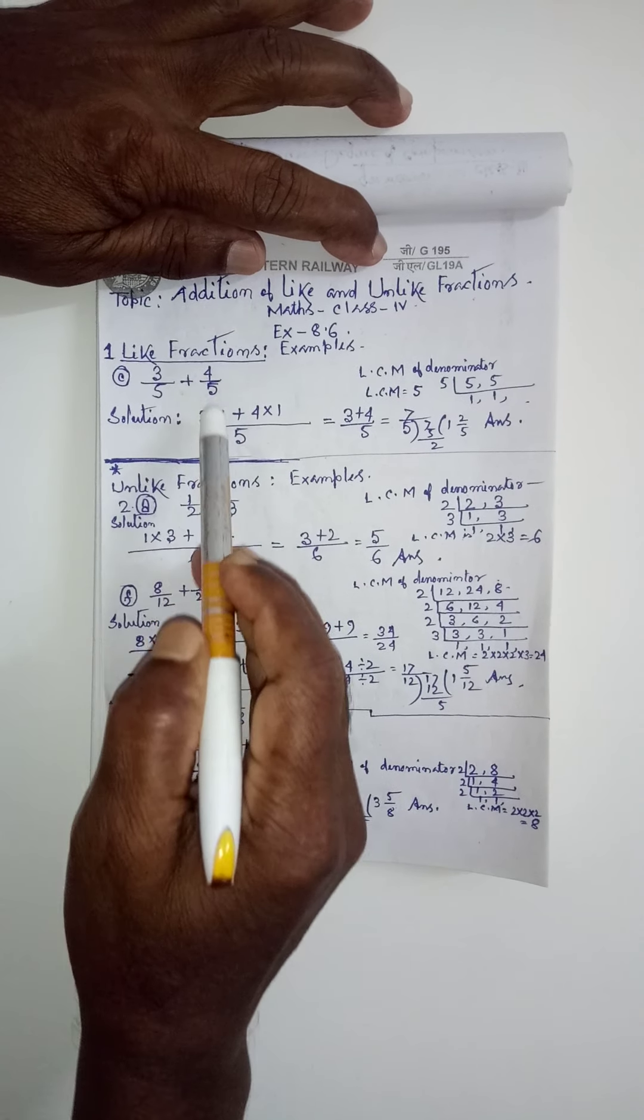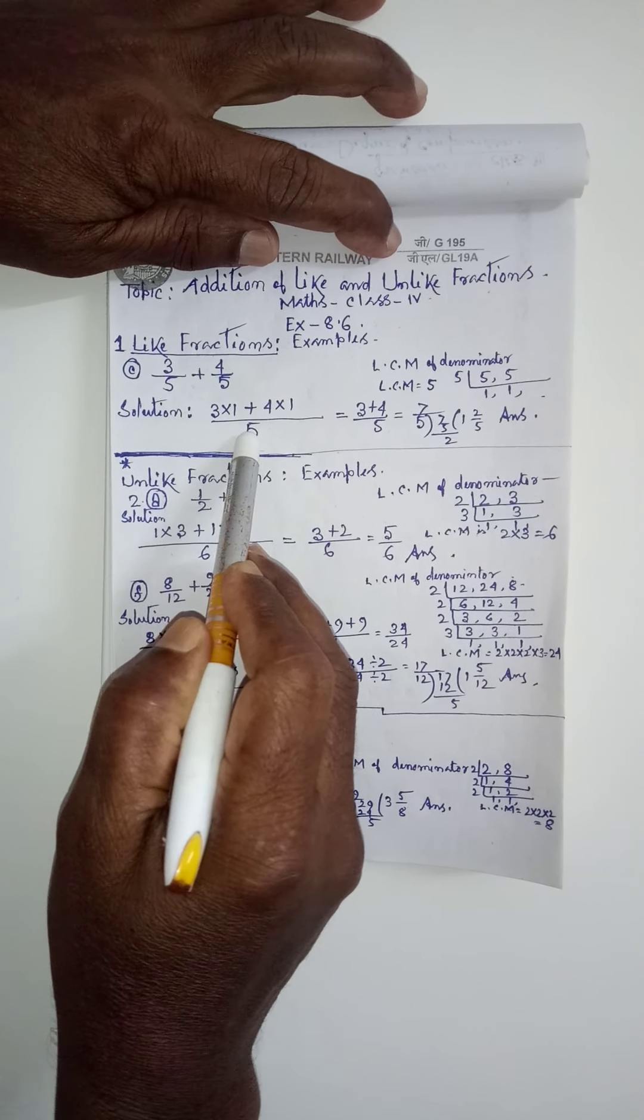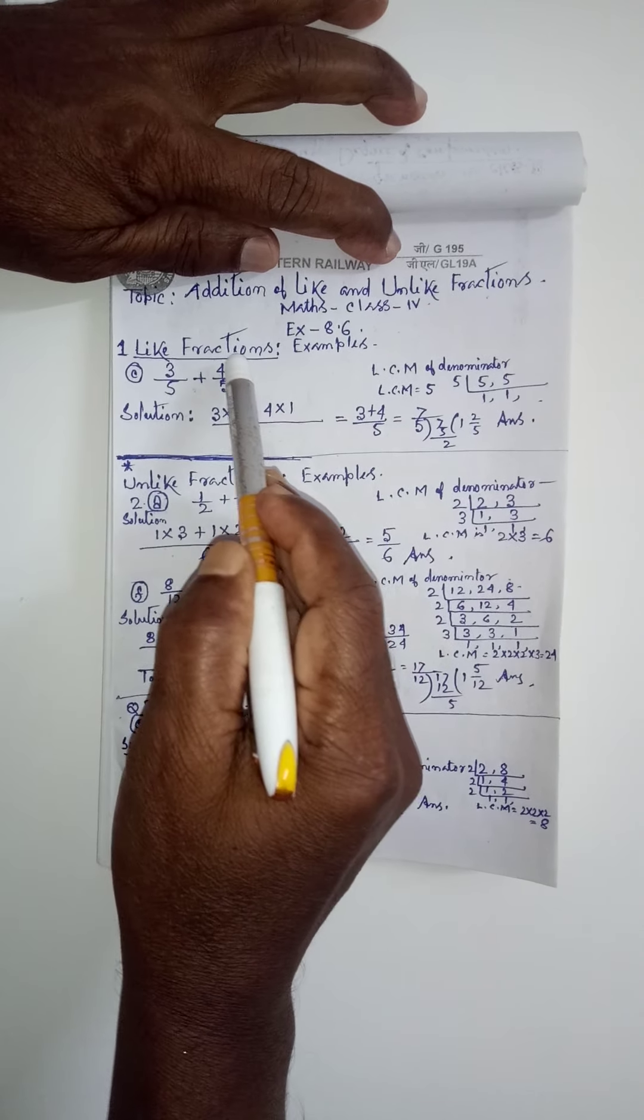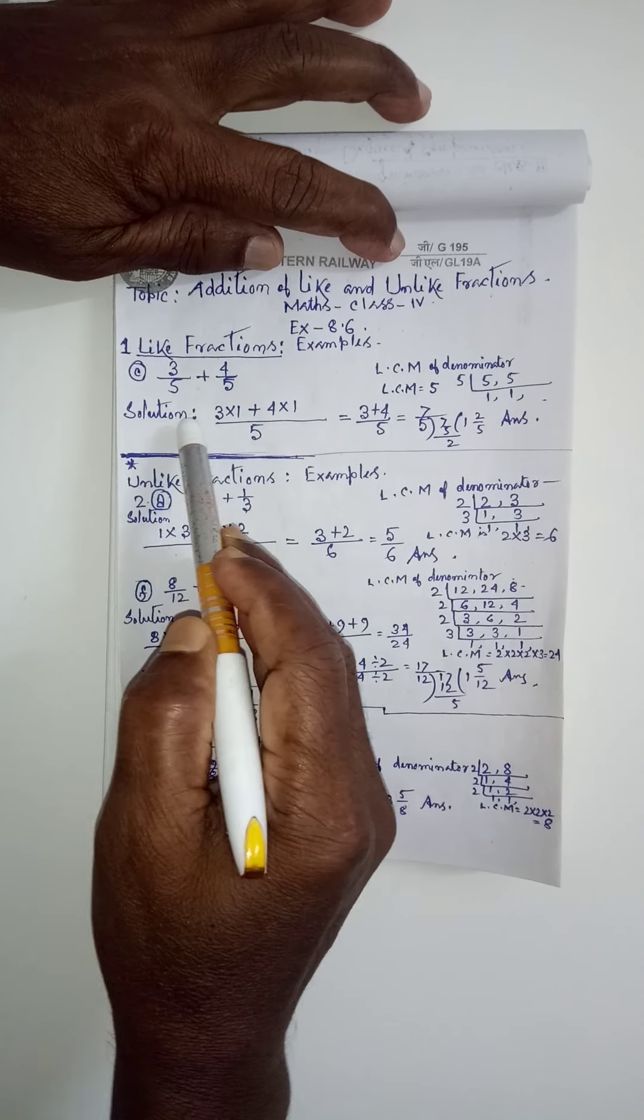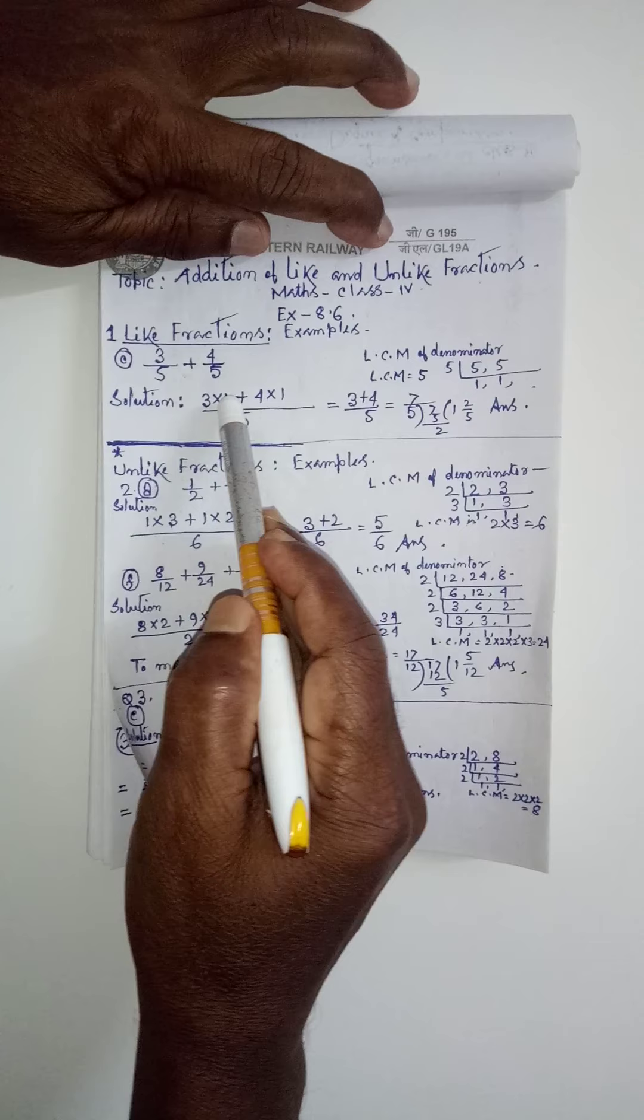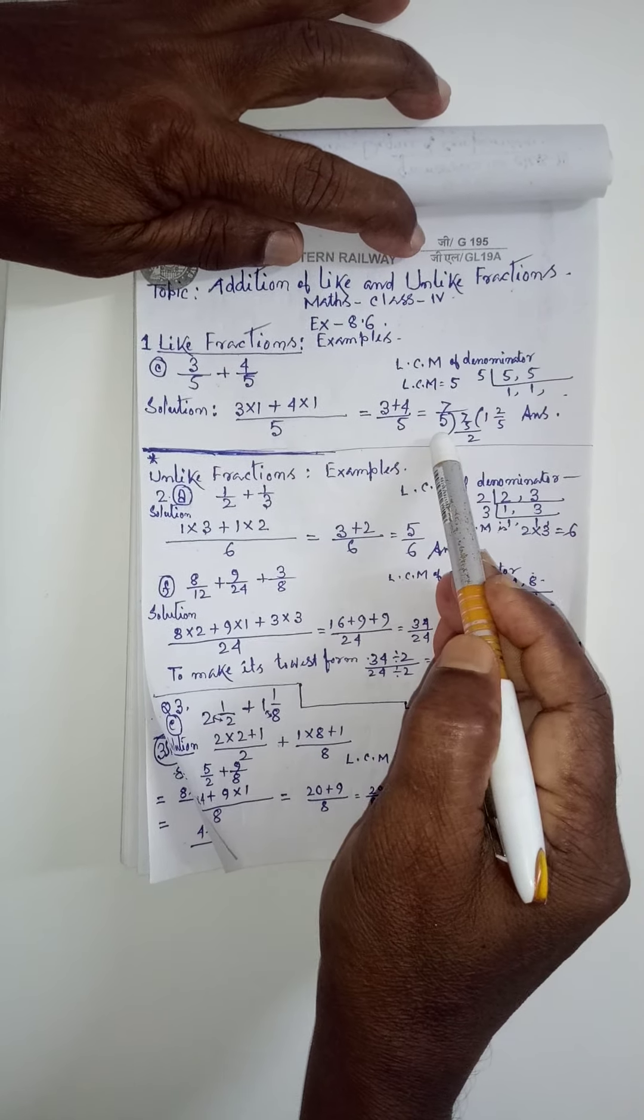Same way here also. This 5 ko, this 5 say, divide karna hai. 5 divided by 5 means 1. 1 say, multiply karna hai, numerator ko. 4 into 1, 4. Same way, how much it is comes? 3 ones are 3, plus 4 ones are 4. 3 plus 4 means 7 by 5.